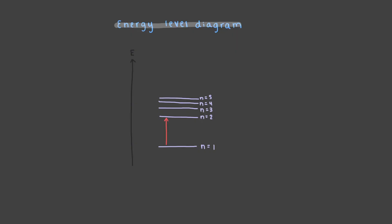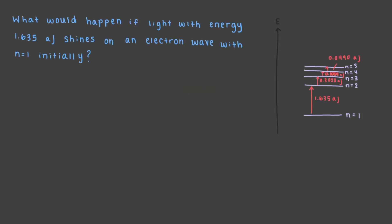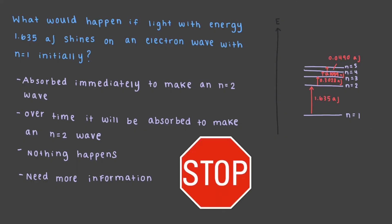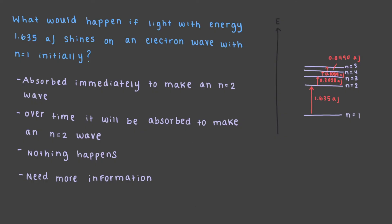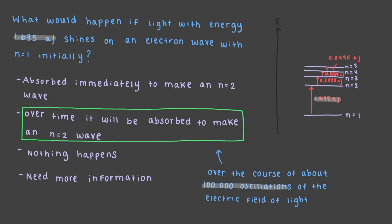Let's add the actual energies of the electron wave states to our diagram — in a later video we will learn more about where these numbers come from. What would happen if light with energy 1.635 attojoules shines on an electron wave with n equals 1 initially? The energy required to transform an electron from n equals 1 to n equals 2 is 1.635 attojoules. Since the light's energy matches this energy change, the light is absorbed and the electron is transformed.